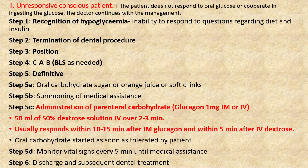Since IV line is usually not available in the dental clinic, glucagon 1 mg IM is preferred. Alternatively, 50 mL of 50% dextrose solution IV may be given over 2 to 3 minutes. The patient usually responds within 10 to 15 minutes after IM glucagon or within 5 minutes after IV dextrose. Once the patient responds, restart oral carbohydrates and monitor vital signs every 5 minutes until medical help arrives. Then the patient can be discharged and subsequent dental treatment planned.